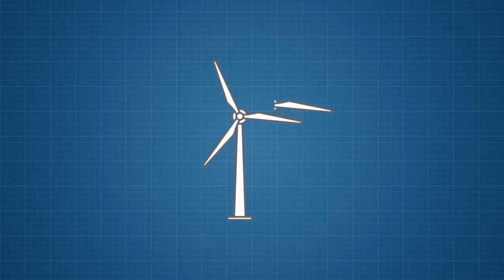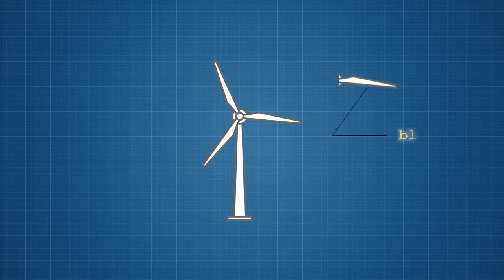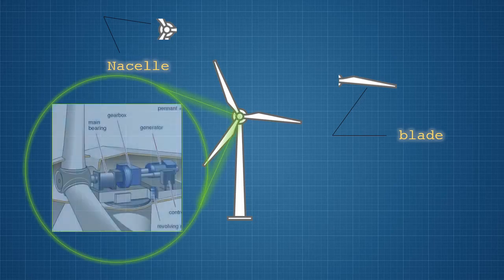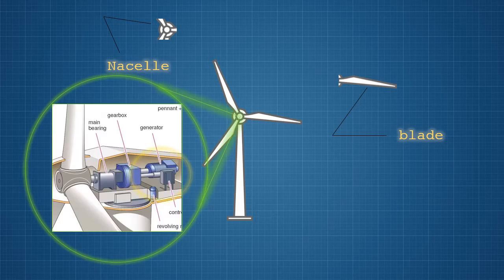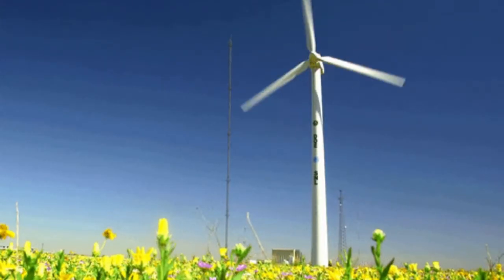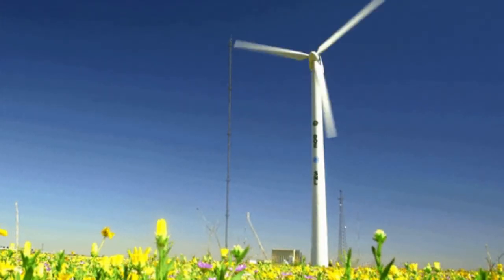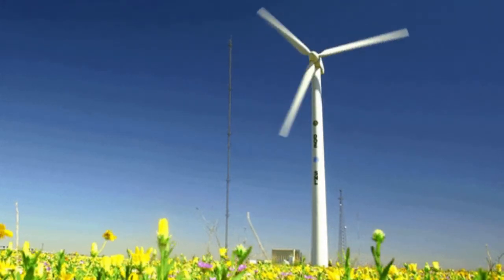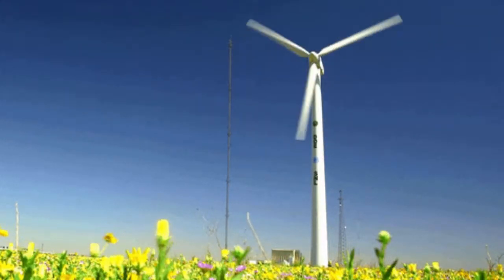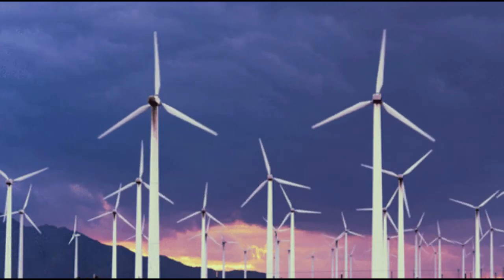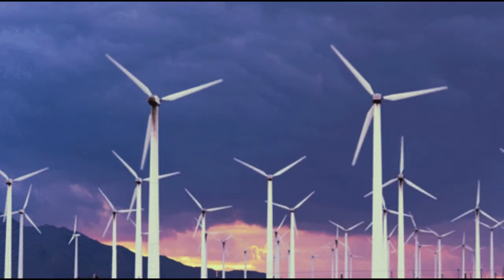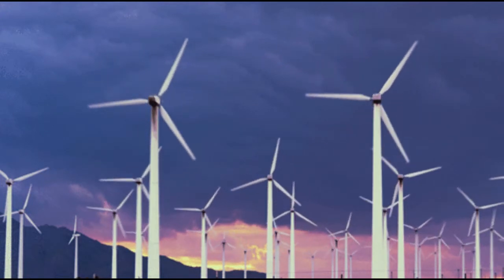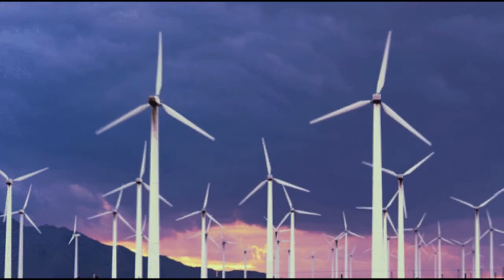Wind turbines use the wind to drive turbines directly. They have huge blades mounted on a tall tower. The blades are connected to a nacelle or housing which contains gears linked to a generator. As the wind blows, it transfers some of its kinetic energy to the blades, which turn and drive the generator, which produces electricity. Several wind turbines may be grouped together in windy locations to form a wind farm.